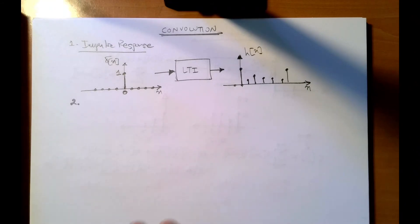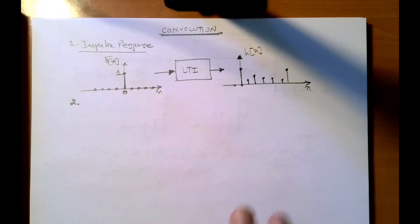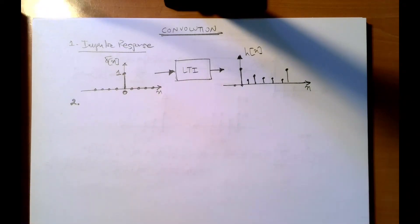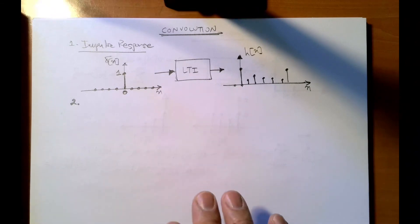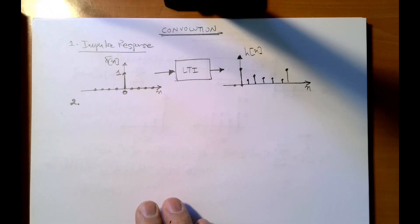We will use the impulse response to introduce the operation of convolution, first in this one-dimensional time-domain fashion, and then in convolutional neural networks we will introduce a two-dimensional equivalent.